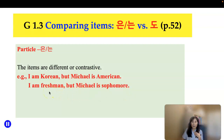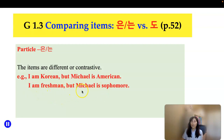Another example: 'I'm a freshman' — 저는 1학년이에요. 'But Michael is a sophomore.' So in regard to school year they are different. By adding particle 은/는 to Michael, you are indicating Michael is different from the previous person.